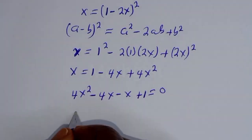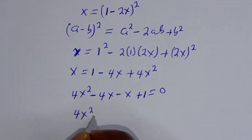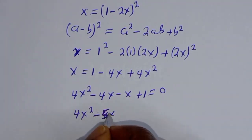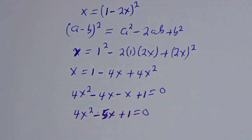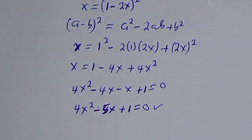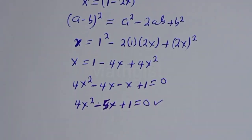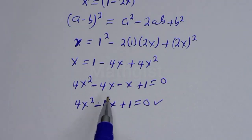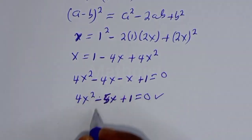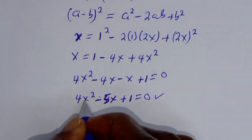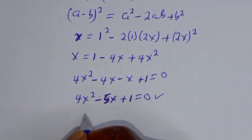We have 4s squared minus 5s plus 1 is equal to 0. So this is a quadratic equation which can be solved using the quadratic formula or factorization method. In this case, I am going to make use of the quadratic formula.